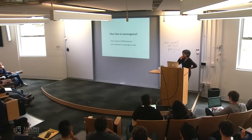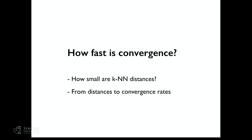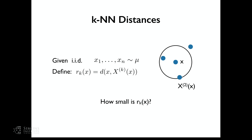Let's go over a quick proof sketch. We'll look at this in two steps: first, how small are these k-nearest neighbor distances, and then how we go from those distances to convergence rates. Let's define rk(x) as the distance to the k-th nearest neighbor.